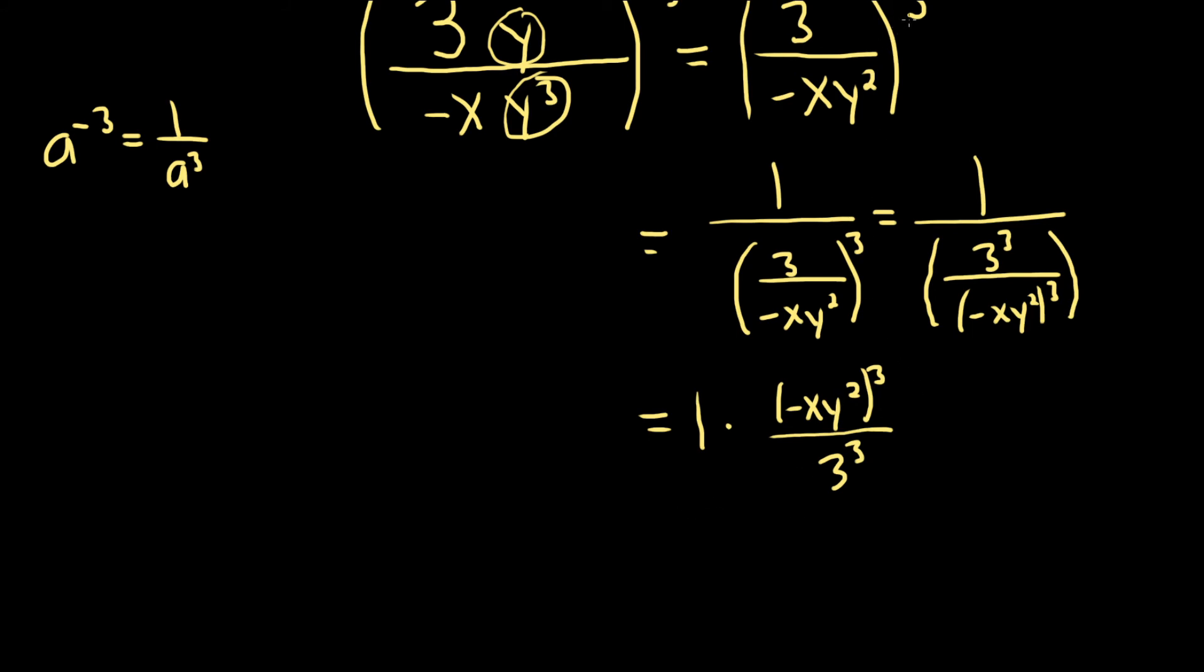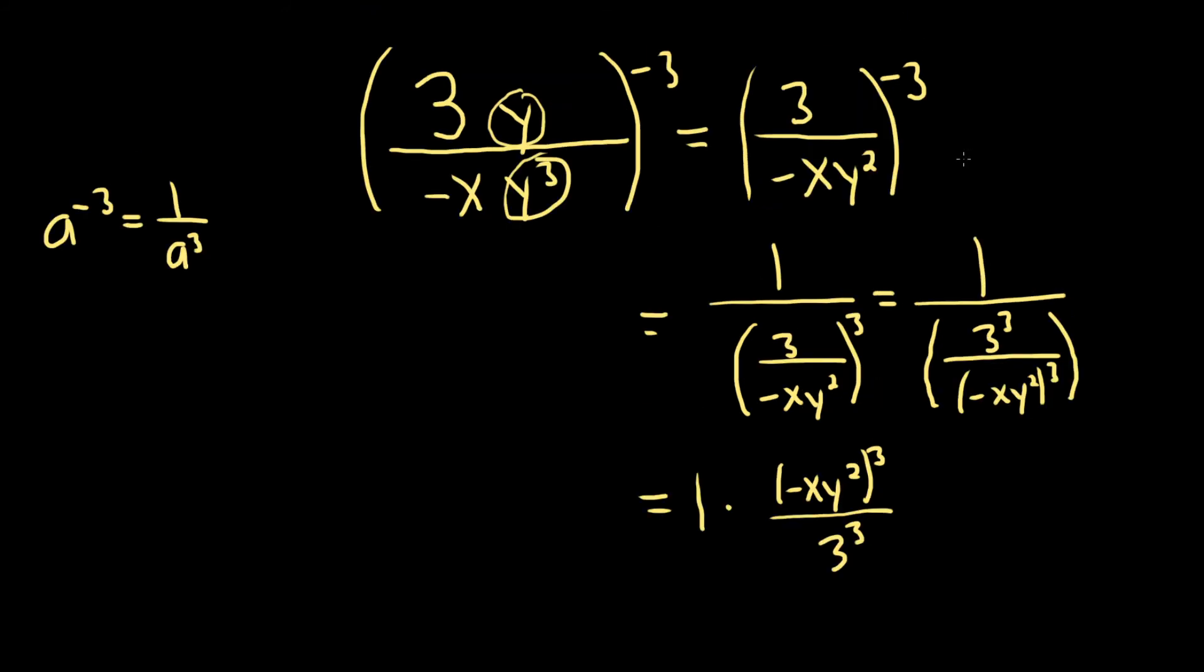So you can bring the negative three downstairs. It becomes positive. And then you can cube each piece using properties of exponents. And dividing means you multiply by the reciprocal. So it's one divided by all of this. So it's times the reciprocal.